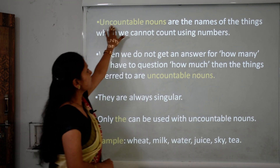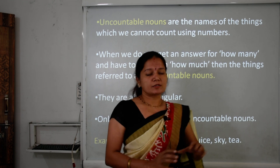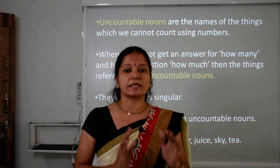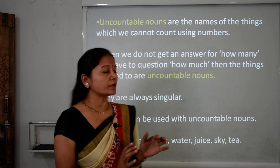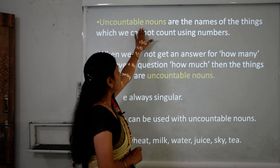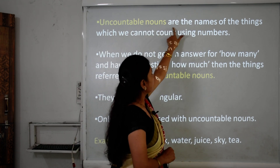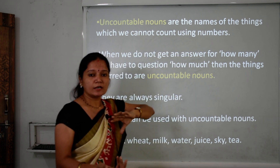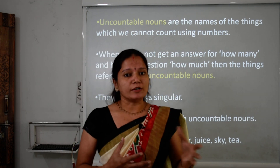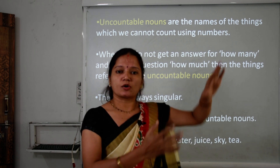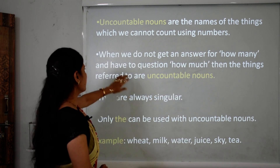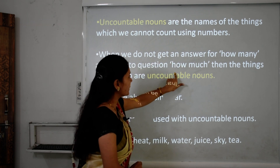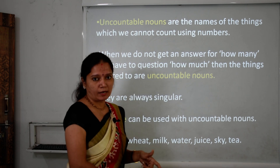Now let's look at uncountable nouns. As the name suggests, uncountable means those nouns which we cannot count are called uncountable nouns. Uncountable nouns are the names of things which we cannot count using numbers. When we do not get an answer for 'how many' and have to ask 'how much,' then the things referred to are uncountable nouns.